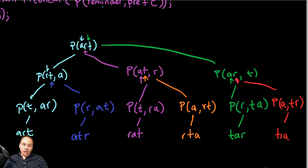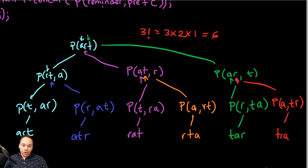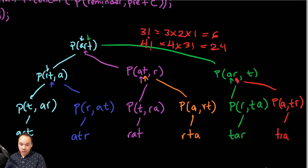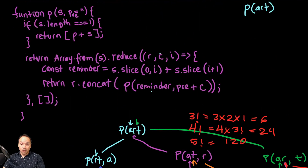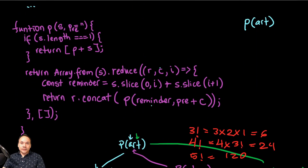So there you have it — the resulting permutations. As you can see, with three letters we have 3 by 2 by 1 equals six permutations. If we add one more letter it will be 4, giving us 4 by 3 by 2 by 1 equals 24. Then 5 factorial is 120, and so on. As you can see this grows faster and faster — factorial runtime grows even faster than exponential. That's factorial runtime.